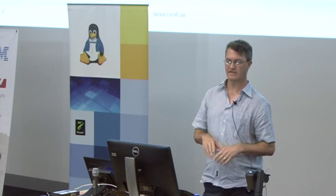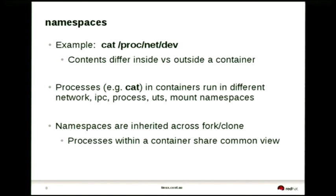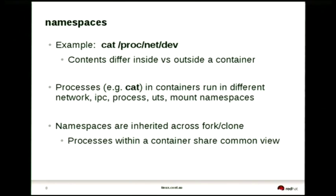The other concept the kernel has is namespaces, which influence the behavior of processes running within a container. For example, if you're in a shell inside a container and you cat /proc/net/dev - where network device statistics come from - that looks different on the inside of a container compared to the host or other containers. These are all problems that need to be dealt with in system-level tools like PCP. Namespaces are inherited across fork and clone, and processes within a container share a common view using this namespace concept.